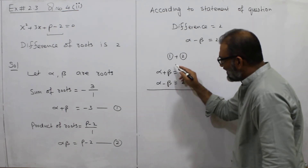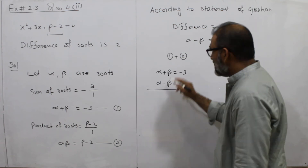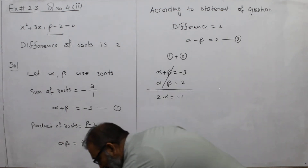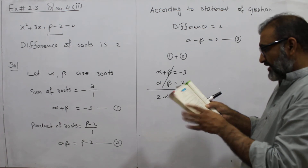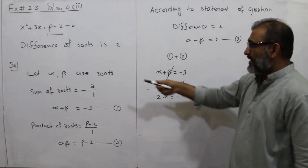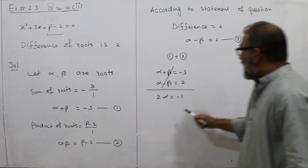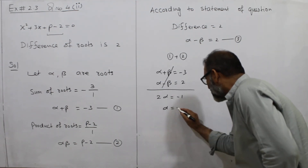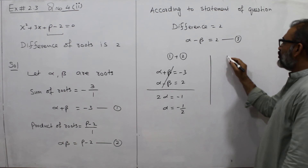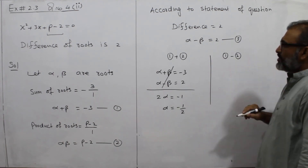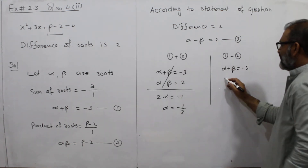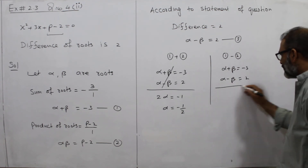Adding equations 1 and 3: beta terms cancel, giving 2 alpha equals minus 1. Let's review — question number 4, part 2. So 2 alpha equals minus 1, meaning alpha equals minus 1 by 2. Now subtracting equation 2 from equation 1: alpha plus beta equals minus 3, and alpha minus beta equals 2, so the signs change.